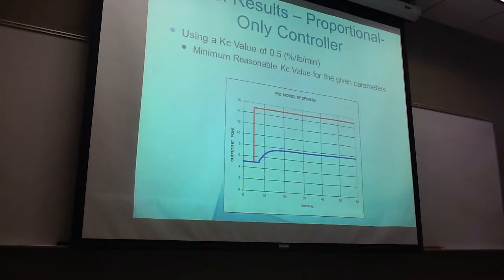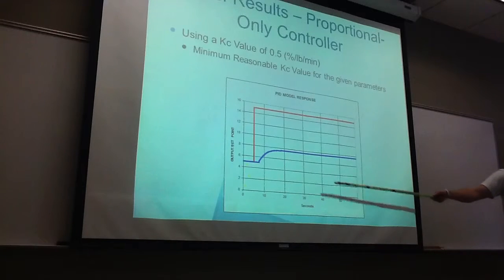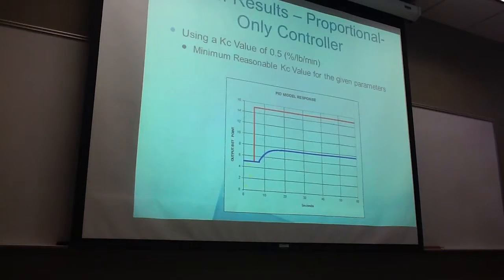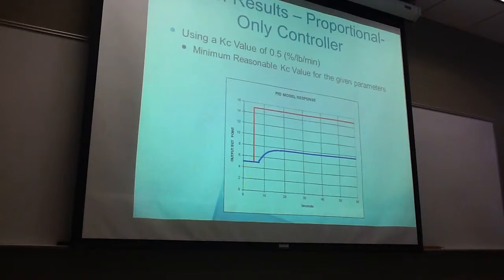And for these same given parameters, our lowest reasonable Kc value of 0.5 percent per pound per minute. We found this to be overdamped. And this is at 1/500th decay ratio. Monotonic, which means it never oscillates. Settling time of 20 seconds.